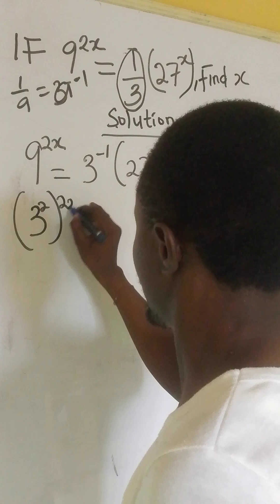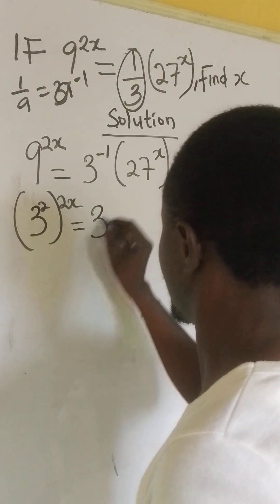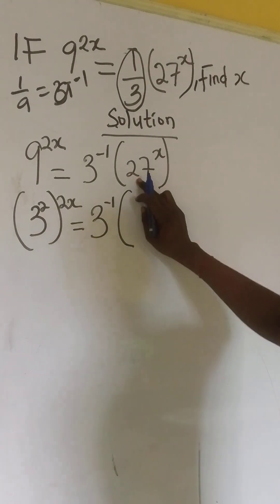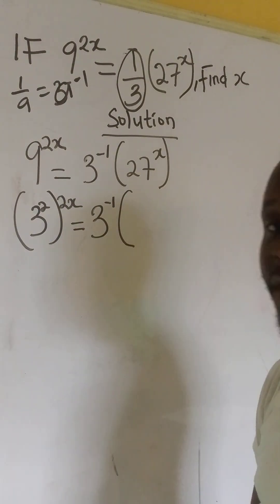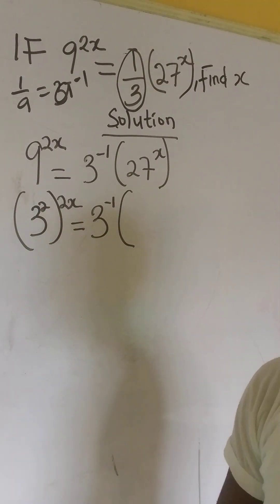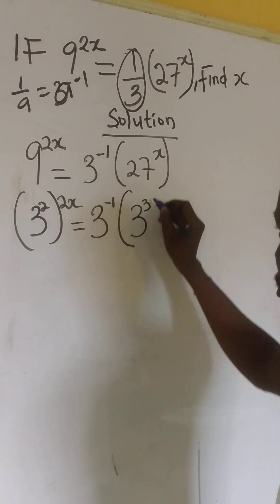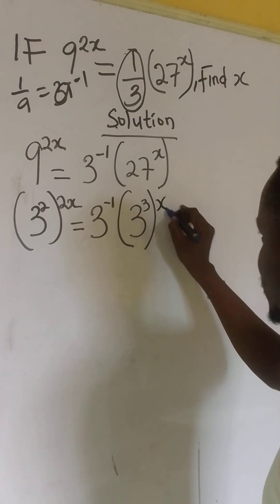raise to the power of 2x equals to 3 raise to the power of minus 1. Now, we have this. 27 here is 3 times 3, that's 9, times 3, that's 3 raise to the power of 3. Now, we have x outside.